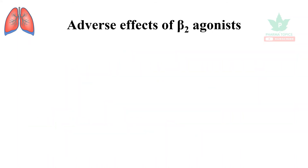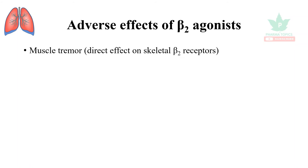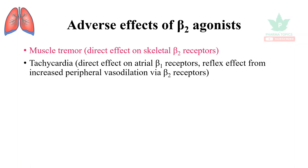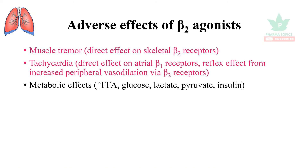The adverse effects of beta-2 agonists include: muscle tremor, which is a direct effect on the skeletal beta-2 receptors; and tachycardia, a direct effect on the beta-1 receptors and a reflex effect from increased peripheral vasodilation via beta-2 receptors in the blood vessels.